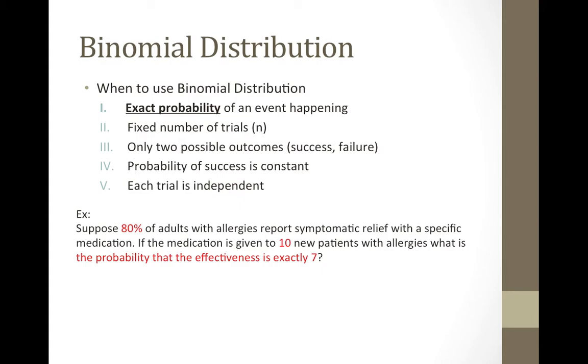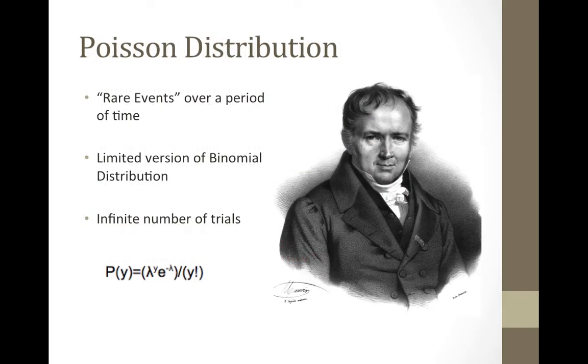Because binomial relies on a fixed number of trials, the probability of success will always be constant. And because the occurrence of one of the patients finding relief does not affect the other, this shows that each trial is independent from the other. Now we move on to Poisson distribution.